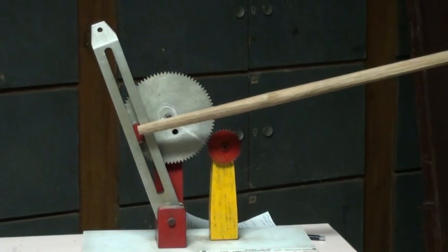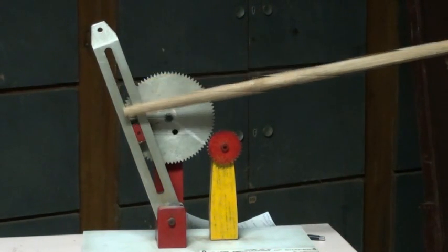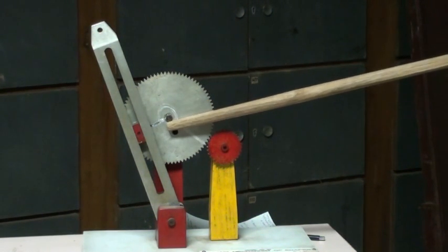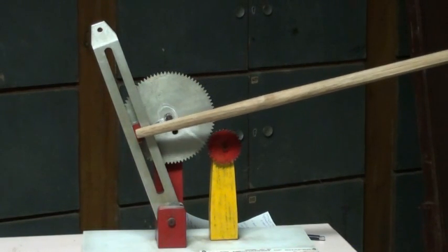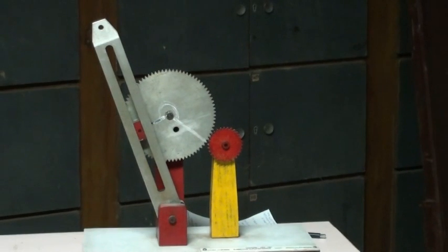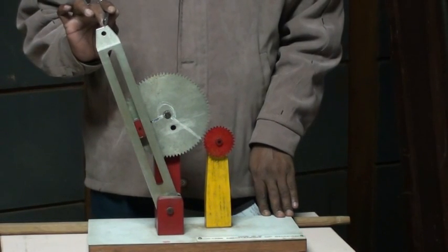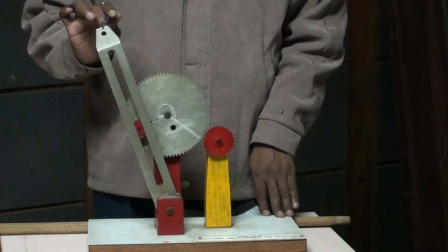Number one pair is sliding between slotted lever and slider. Second turning pair, third turning pair and fourth one is a turning pair between crank and crank. Now you are looking here, oscillating lever is at one extreme end.